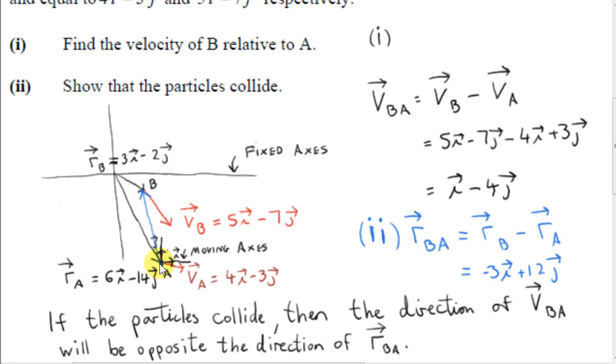Okay, so at time t equals 0, particle A is here and particle B is here. Now from the point of view of A, if B is to collide with A, then the velocity of B relative to A must be in a direction that's opposite to vector RBA.